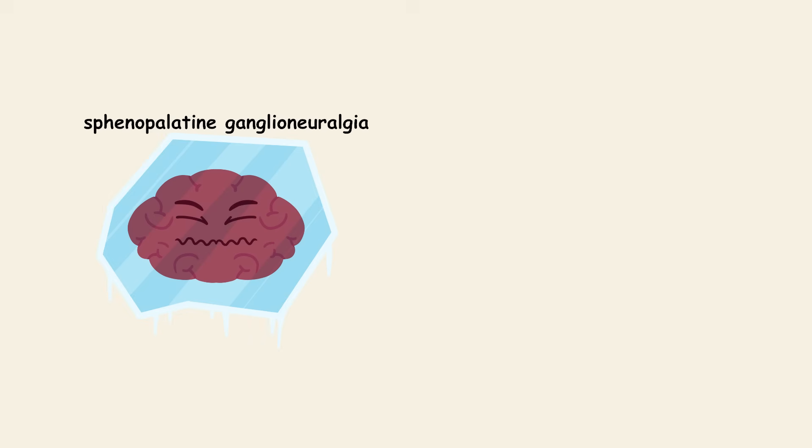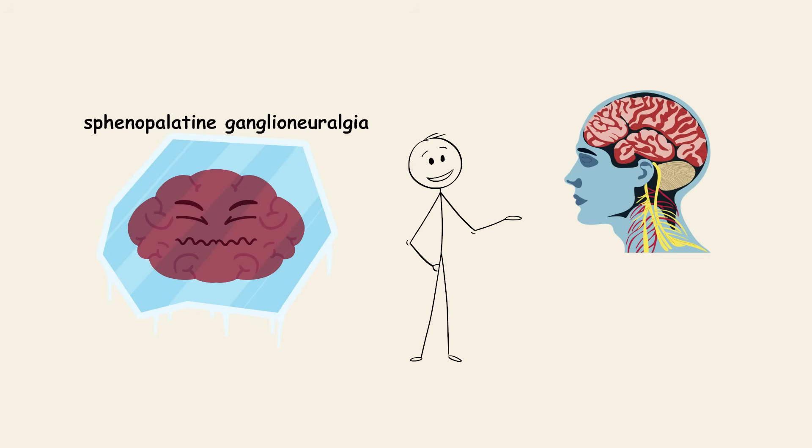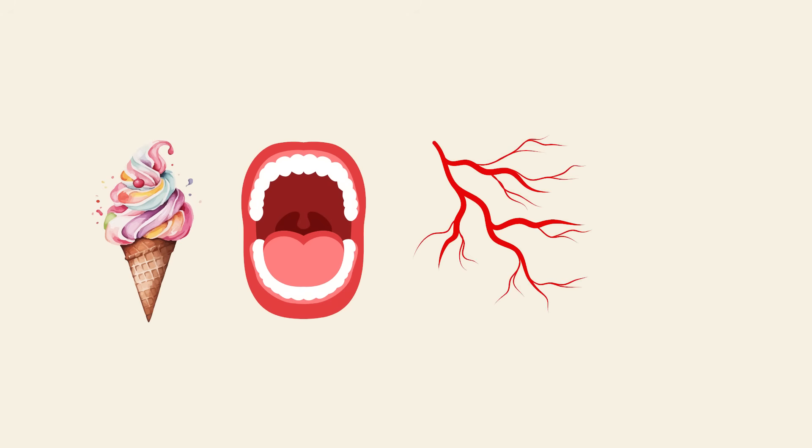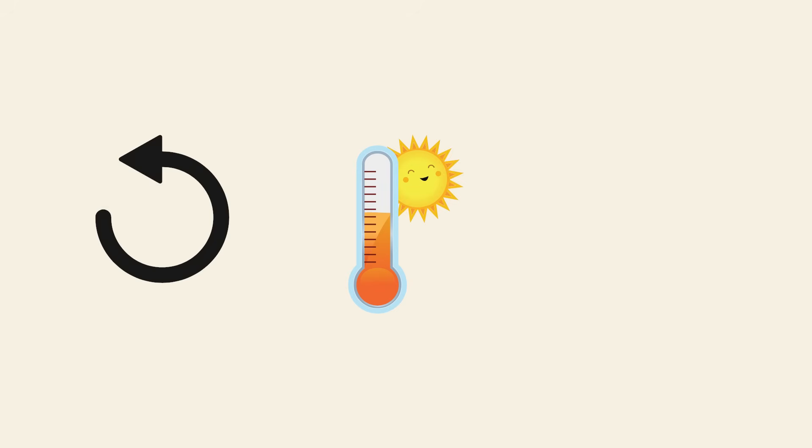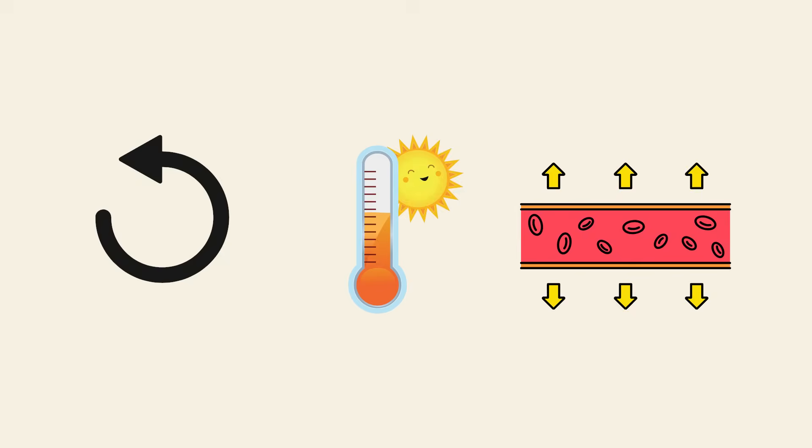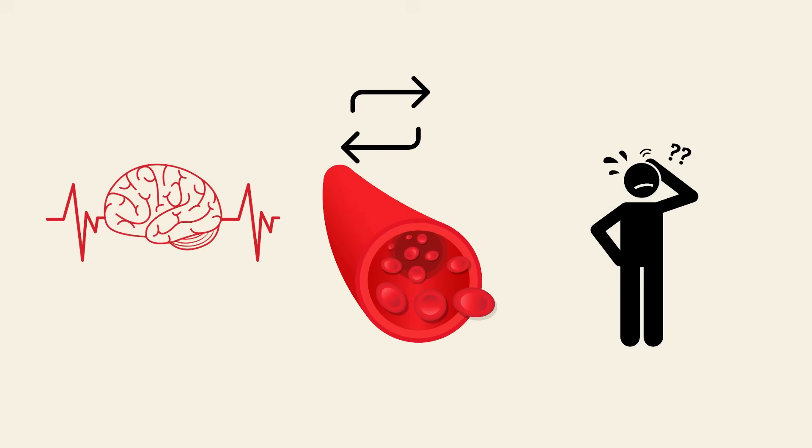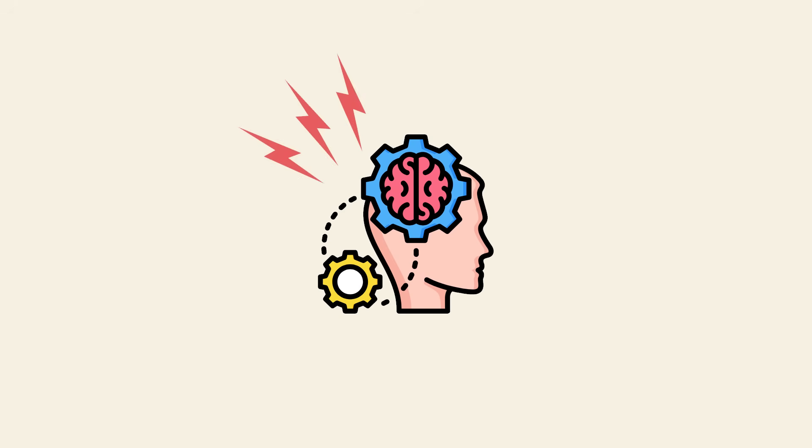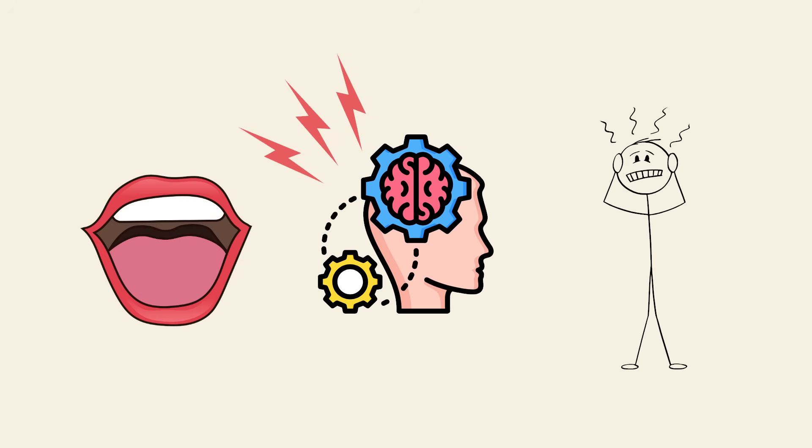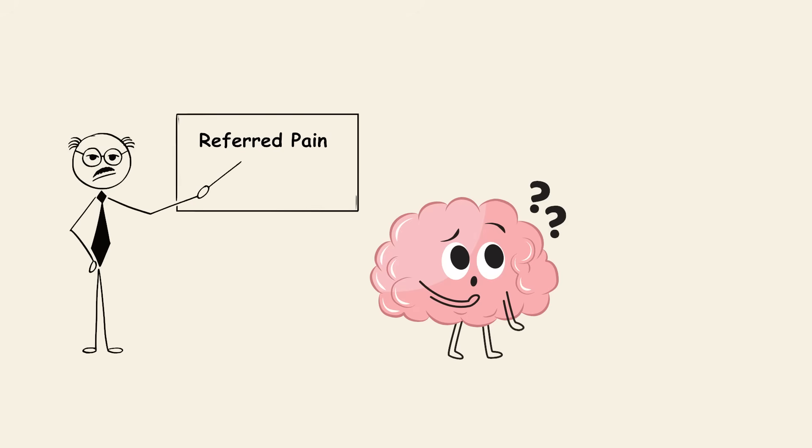The technical term is sphenopalatine ganglioneuralgia, a fancy way of saying your brain's nerve bundle freaks out. When something cold hits the roof of your mouth, it causes blood vessels in that area to constrict rapidly. Then, as your body warms it back up, those vessels quickly dilate. This sudden change in blood flow sends signals to your brain that something's off. The brain interprets these signals as pain, and since the sensation comes from the mouth, it misfires the pain to your forehead. It's a kind of referred pain where the brain gets a bit confused about where the problem actually is.